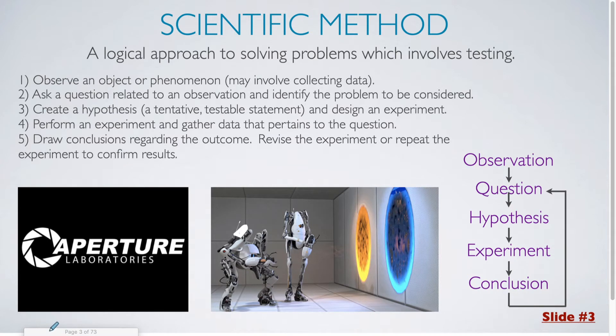The scientific method is a logical approach to solving problems which involves testing. The first step that you would need to take is to observe an object or phenomenon, and this may involve the collecting of data. Then you would ask a question related to an observation and identify the problem to be considered.